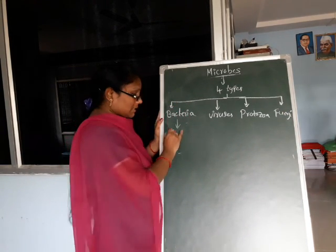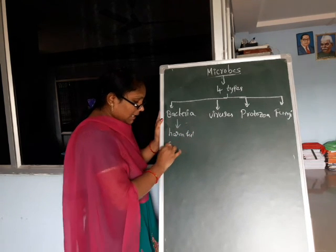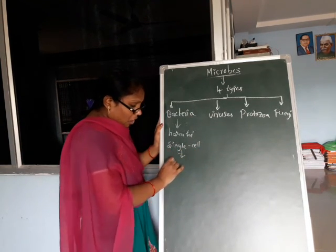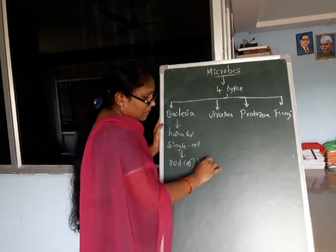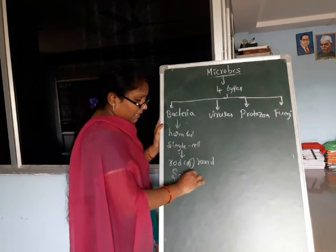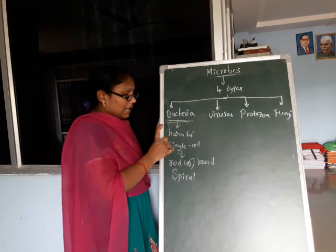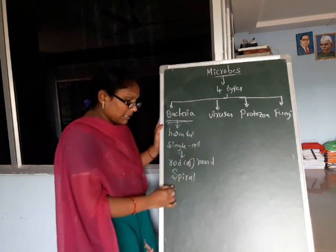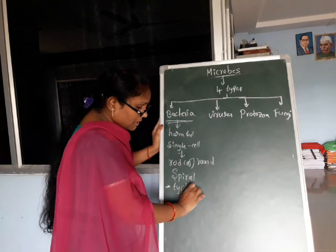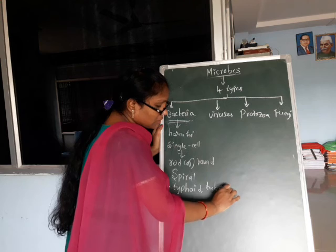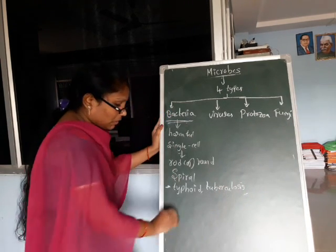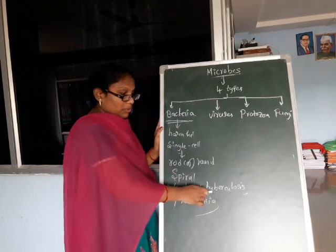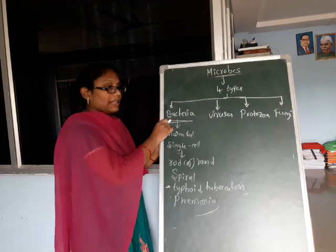Bacteria is harmful. It is a single-celled organism. Bacteria may be rod shape, round shape, or spiral shape. Bacteria causes typhoid, tuberculosis, and pneumonia.